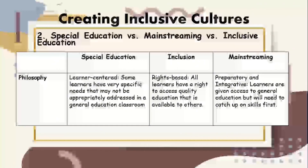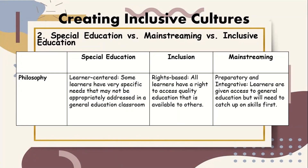In terms of philosophy: in special education, it is learner-centered — some learners have very specific needs that may not be appropriately addressed in the general education classroom; in inclusion, it is rights-based — all learners have a right to access quality education that is available to others; in mainstreaming, it is preparatory and integrative — learners are given access to general education but will need to catch up on skills first.